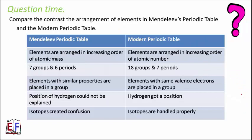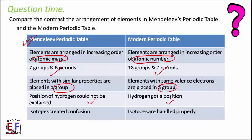Compare and contrast the arrangement of elements in Mendeleev's periodic table and the modern periodic table. Mendeleev's table had 7 groups and 6 periods; the modern table has 18 groups and 7 periods. Mendeleev's was based on atomic mass; the modern is based on atomic number. In both tables, elements with similar properties are placed in the same group. Mendeleev's table could not explain hydrogen's position, but the modern periodic table handles it well. Isotopes caused confusion in Mendeleev's table but are properly handled in the modern one.